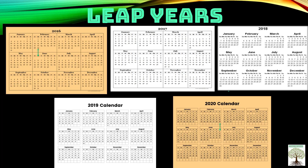2020 is also a leap year, so in the month of February one extra day is added. In 2016 also, one extra day was added in the month of February. But in 2017 only 28 days, 2018 28 days, 2019 28 days. So after every fourth year this leap year comes.